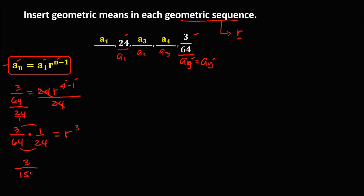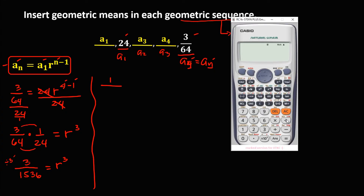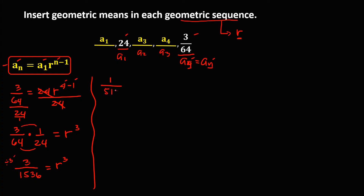Simplifying: 3 times 1 is 3, over 64 times 24, which equals 1536. So we have 3 over 1536 equals R to the power 3. Since 3 over 1536 is divisible by 3: 3 divided by 3 is 1, and 1536 divided by 3 is 512. So 1 over 512 equals R cubed. To solve for R, we take the cube root of both sides.